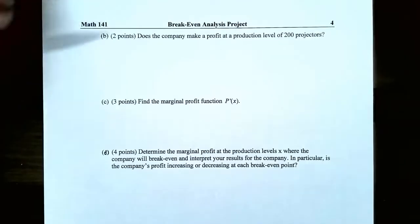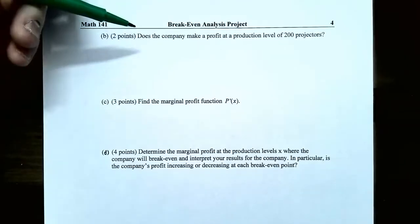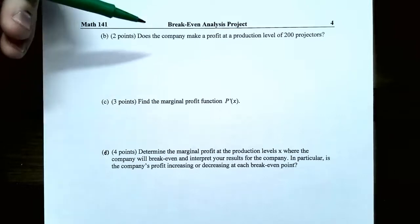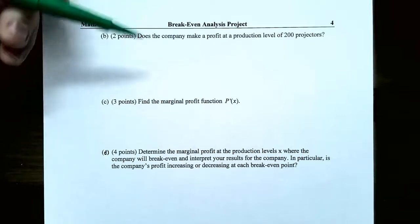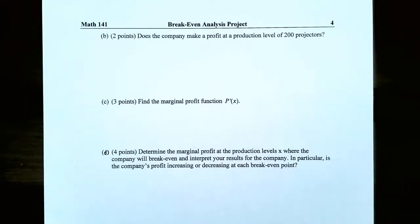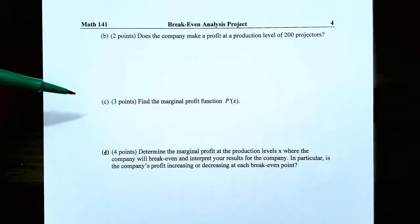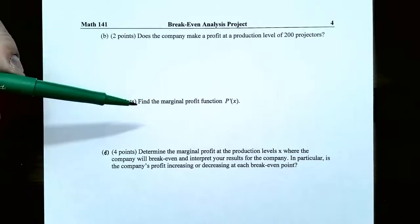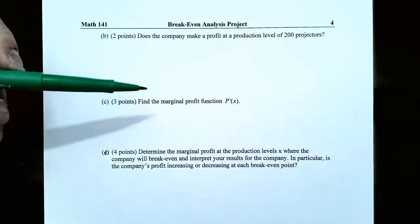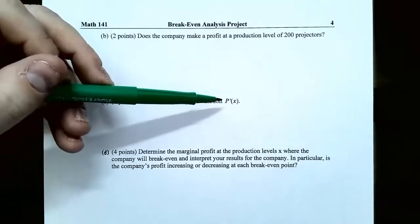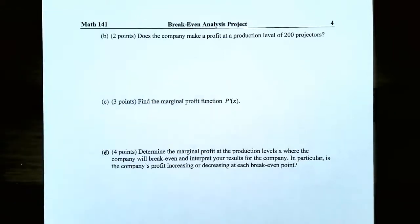Part B: does the company make a profit at a production level of 200 projectors? From the previous part you found the profit function — now find out what the profit function equals when 200 projectors are produced. Part C: find the marginal profit function P′(x). We discussed previously in the course that the marginal profit function is the derivative of the profit function, so find the derivative of the profit function.